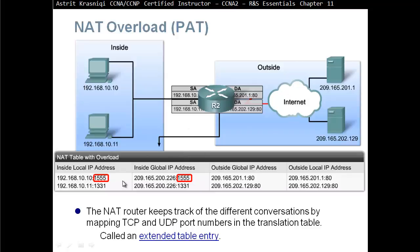The router will try to keep the port numbers the same, but it doesn't have to. It stores this information in the extended table entry. The destination port number remains the same — the router does not change the destination. For example, if a PC is trying to reach port 80 (web server) and the router translated it to 443, it would not be successful. So the only things we translate are the source port number and the source IP address.